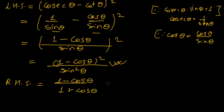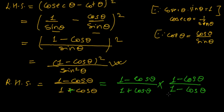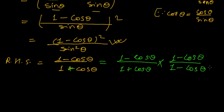Let me rationalize this problem using another color. In this type of expression — something minus something in the numerator and the same with only a sign difference in the denominator — we generally rationalize by multiplying with the negative of the denominator. So I am multiplying both numerator and denominator by 1 minus cosine theta. The numerator becomes 1 minus cosine theta whole square.